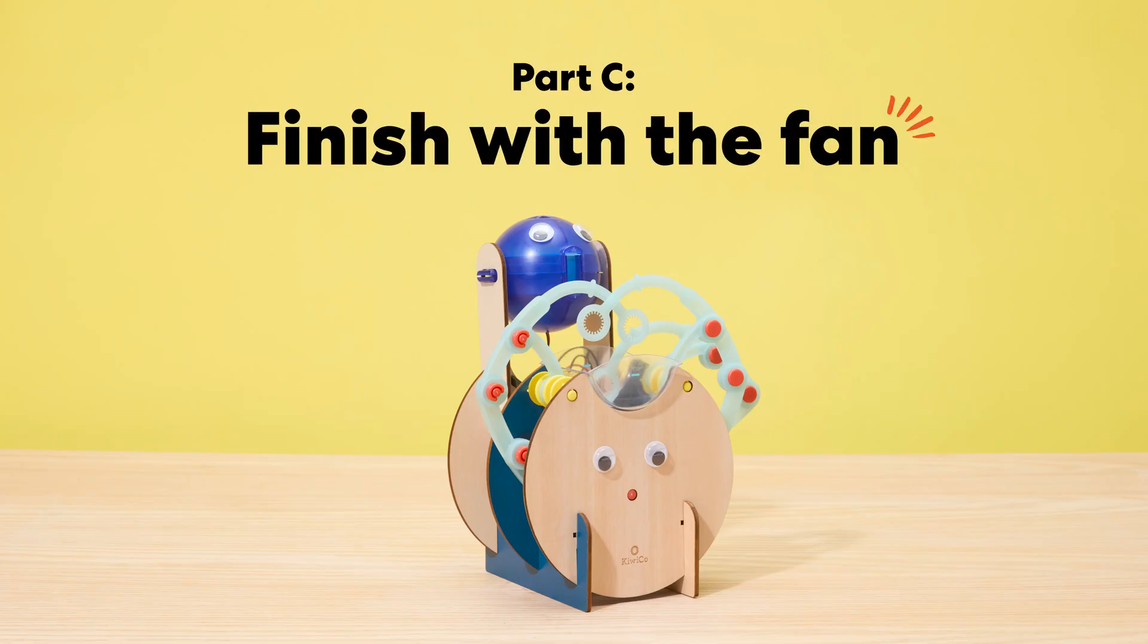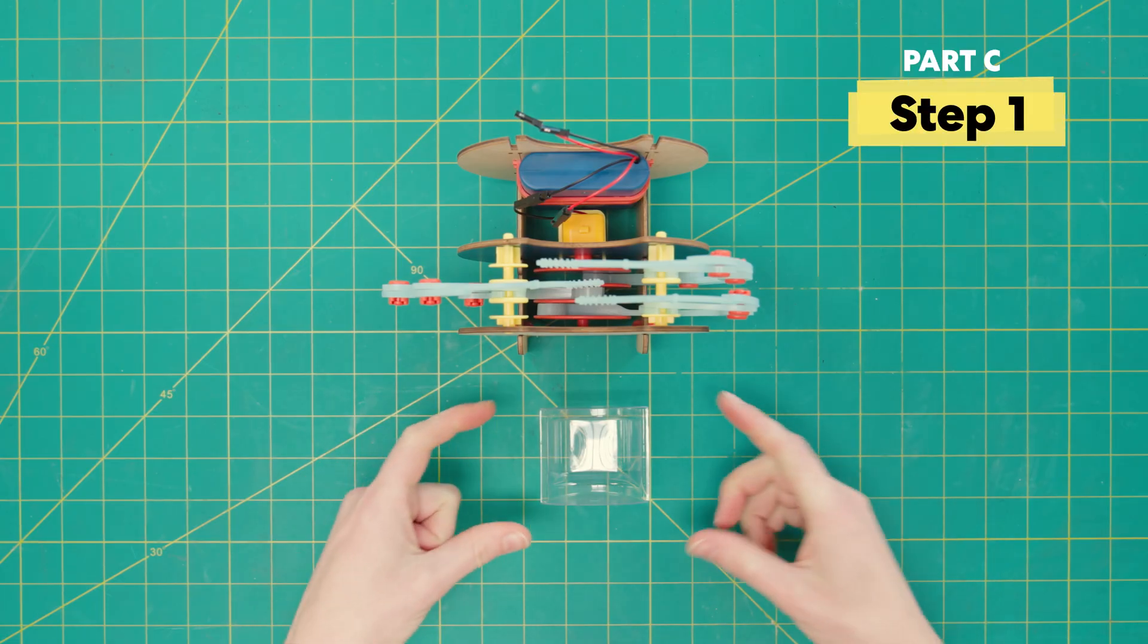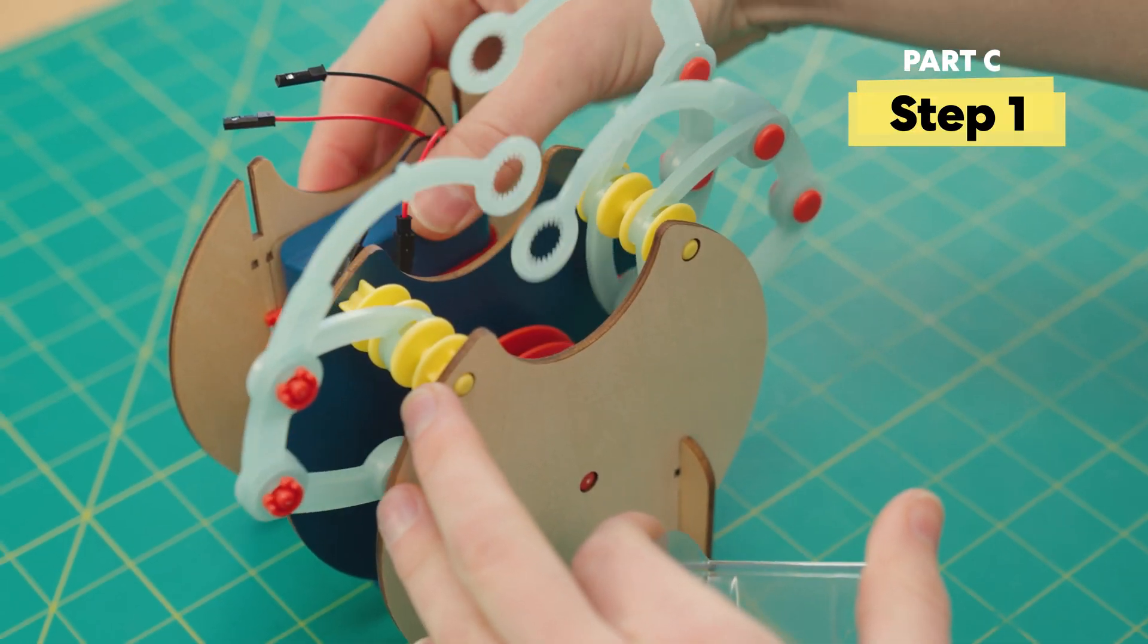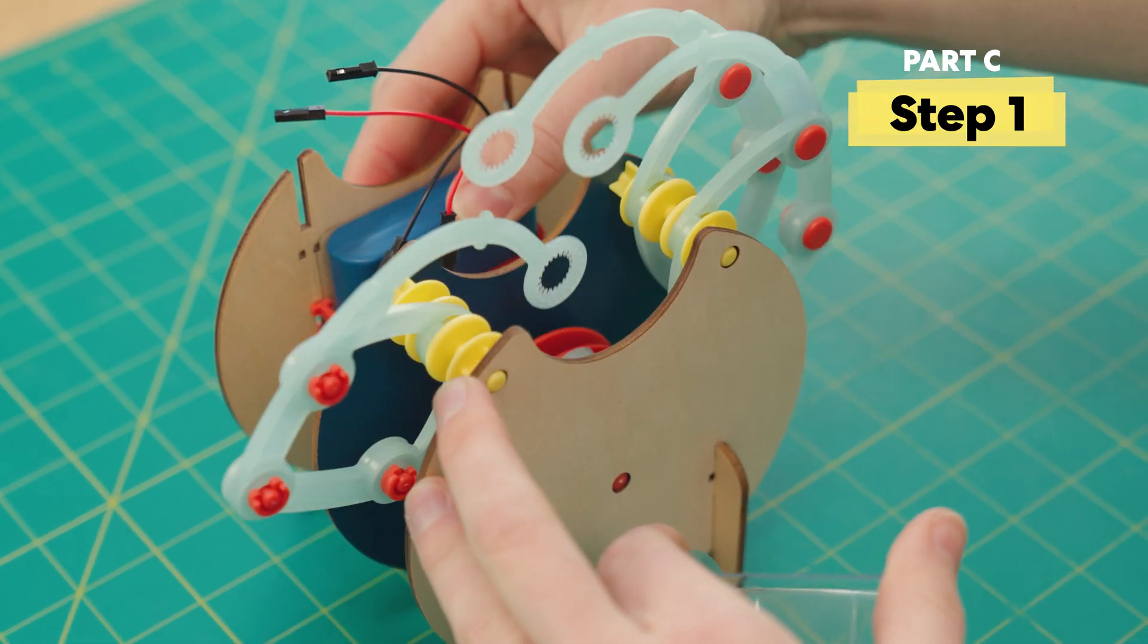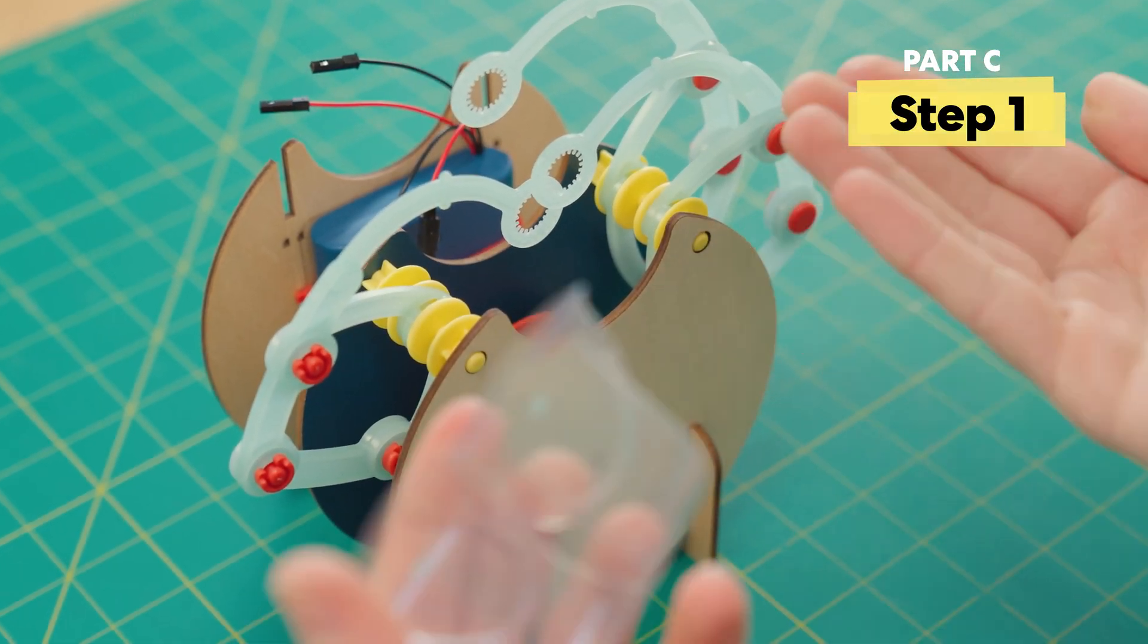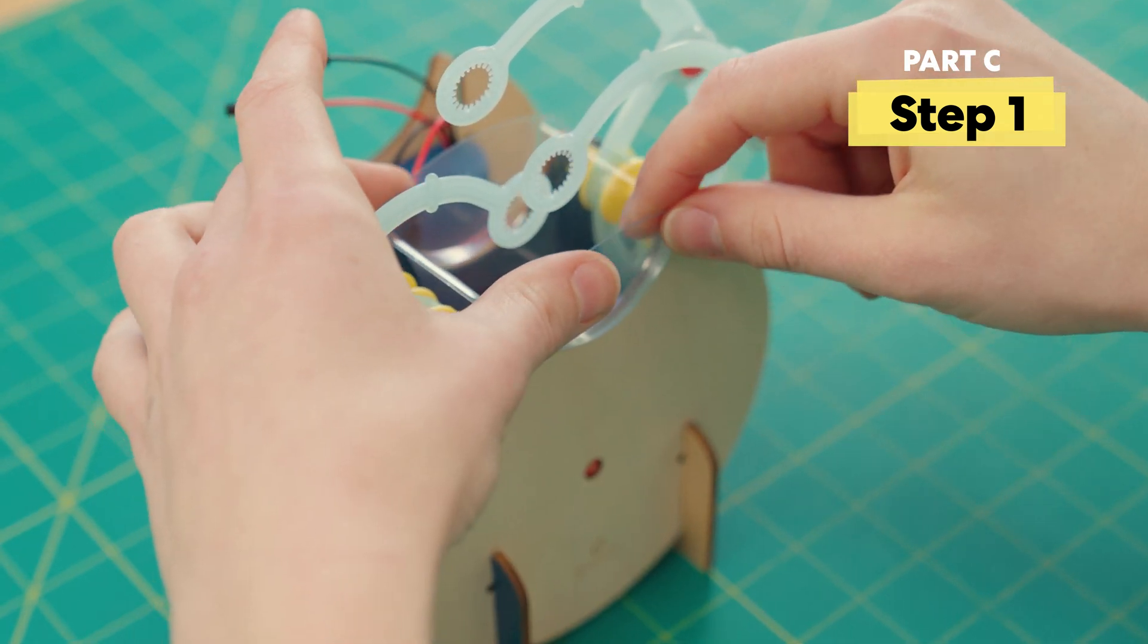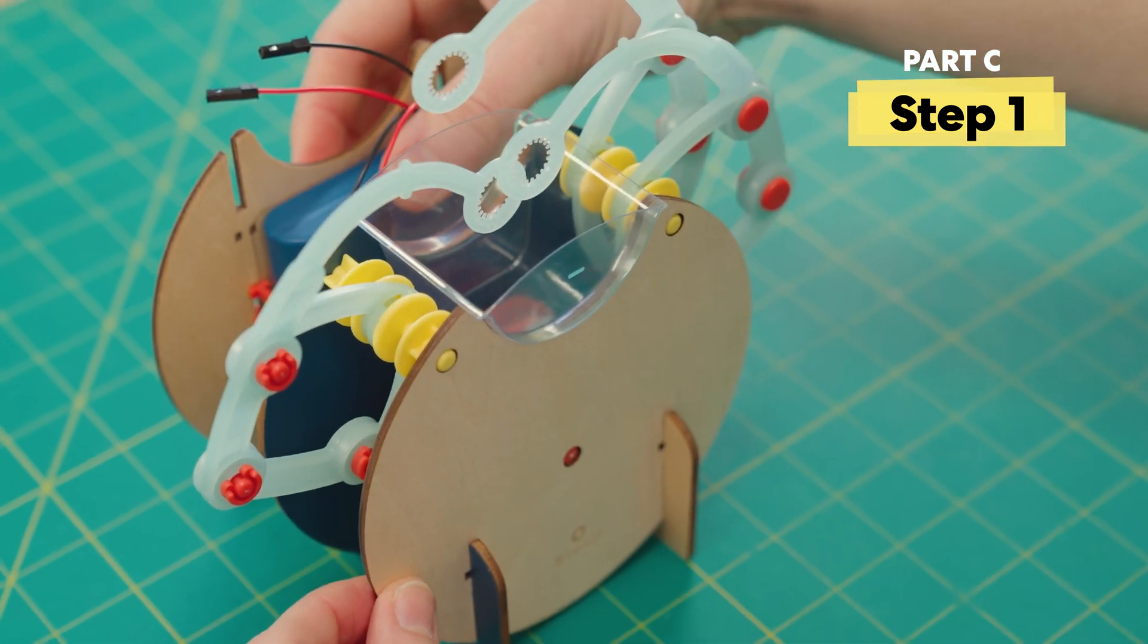Part C, finish with the fan. First up, let's install the tray. So we're going to put this tray right in here underneath the bubble wands. If the wands are in the way, go ahead and turn it on and back off again until they're kind of lifted up out of the way. Then slide in this little tray. Excellent. This is where our bubble solution is going to go. Perfect.